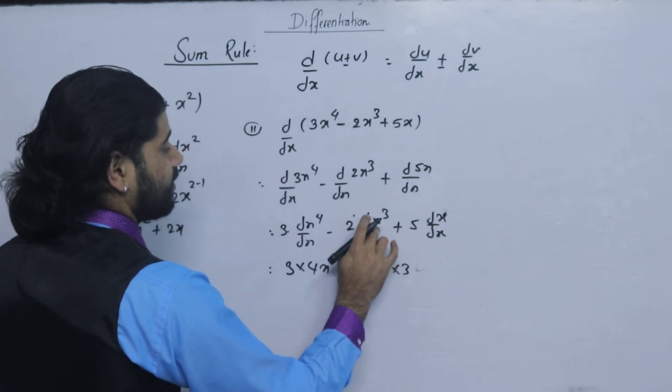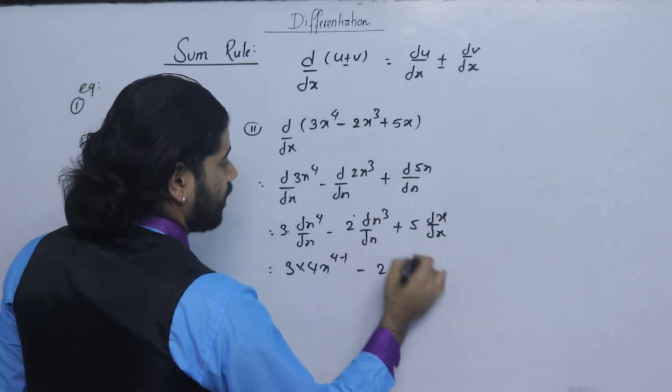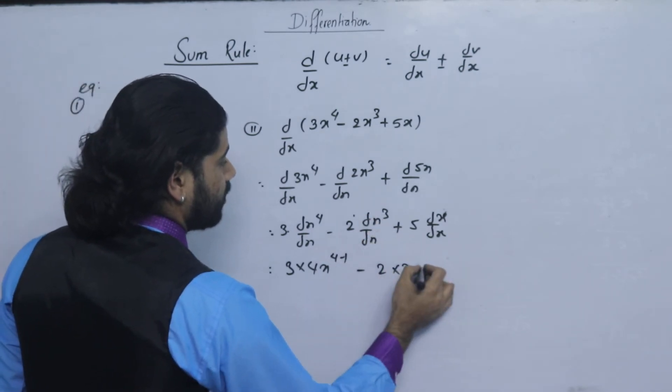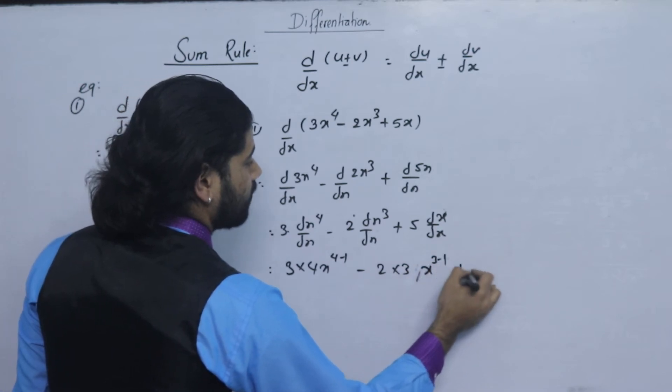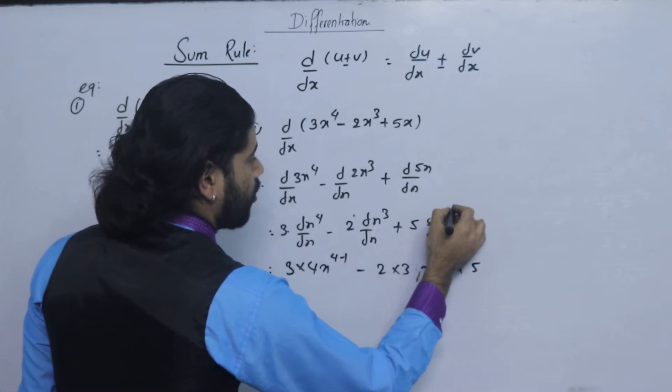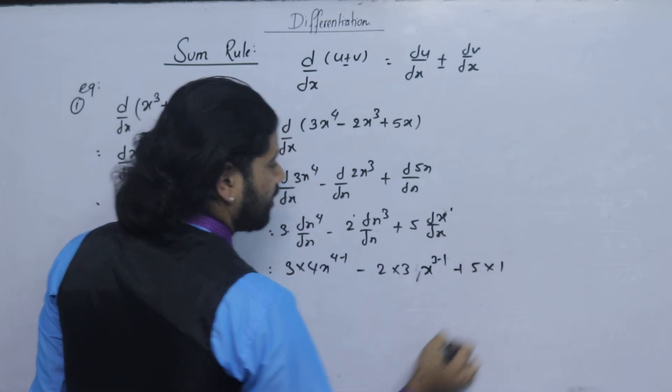Differentiation of x cube: x over 3 minus 1, plus 5x over 3 minus 1, plus 5x over 1.